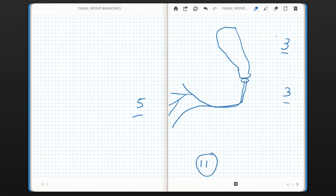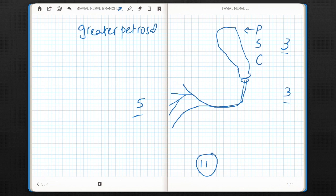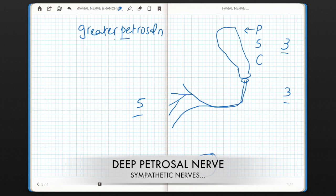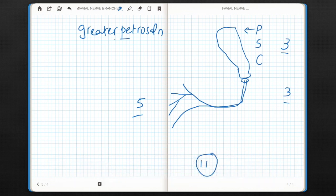For the first 3 branches within petrous temporal bone, there is a mnemonic you need to remember: P, S, and C. This P stands for greater petrosal nerve. This nerve will join with deep petrosal nerve to form nerve of pterygoid canal and that will end up into pterygopalatine ganglion. Basically it is carrying preganglionic parasympathetic fibers for the lacrimal gland, nasal glands, and palatine glands.